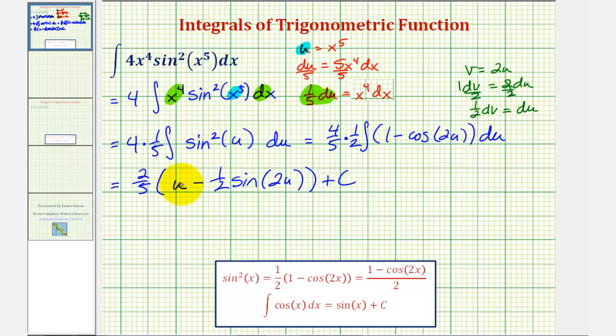For the last step, we'll substitute x to the fifth for u. So we'll have two-fifths x to the fifth for this product, and then for this product,